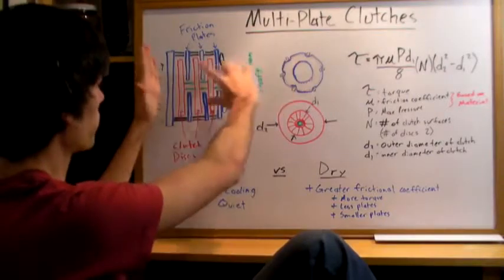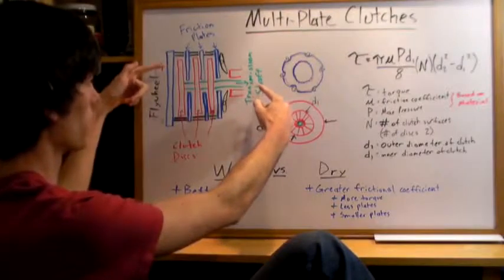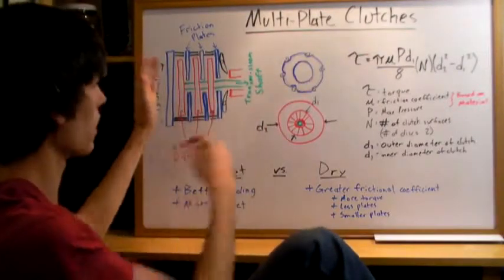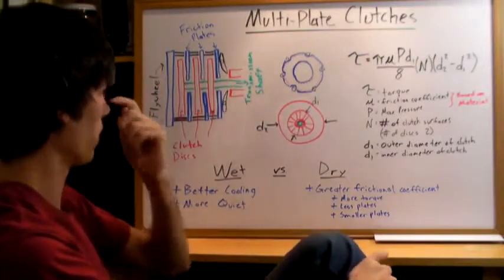As the spring pushes them all together, they can all slide in, and the transmission shaft can lock up with the flywheel. And then as you push in the clutch and release the spring, then they can all loosely just rotate on their own.